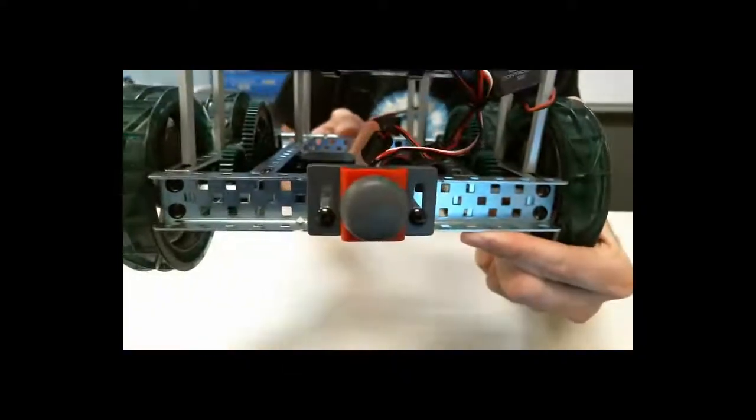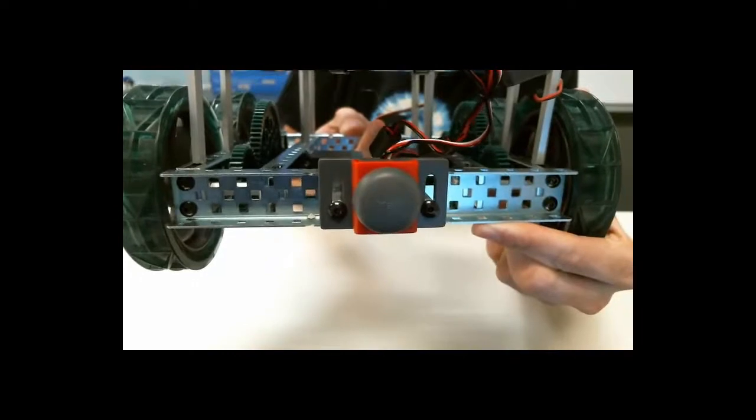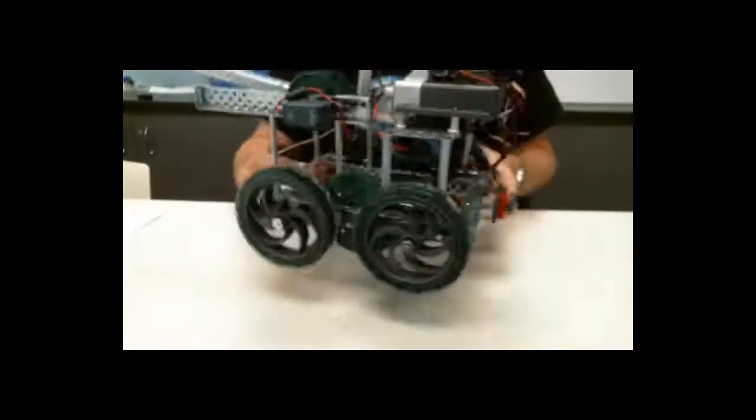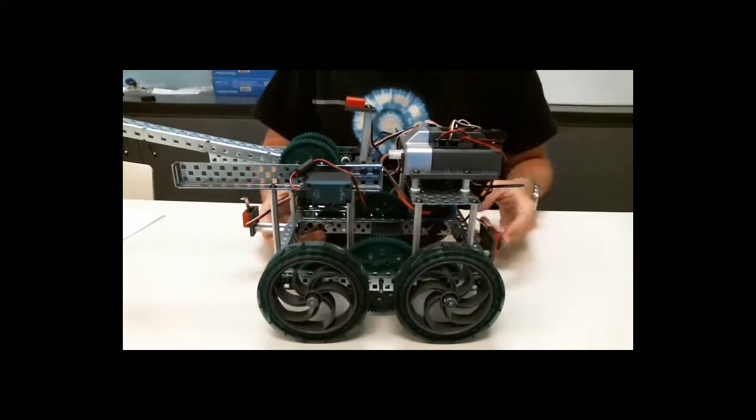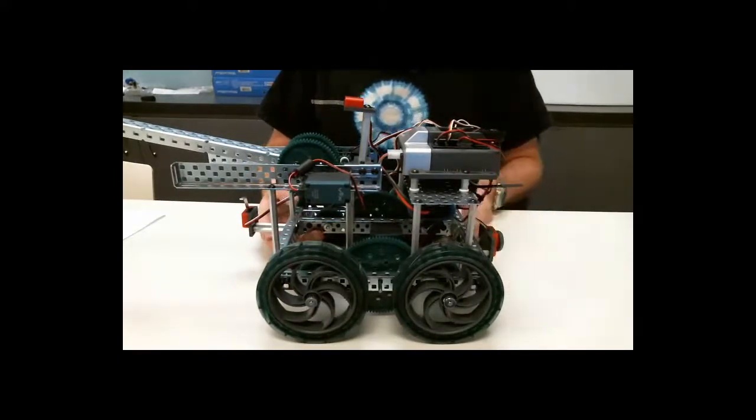Another use for the bumper switch is actually to mount it on the front, side, or back of the robot. Now, it's very helpful during autonomous to do this because it can help your robot position itself to a wall during autonomous mode.